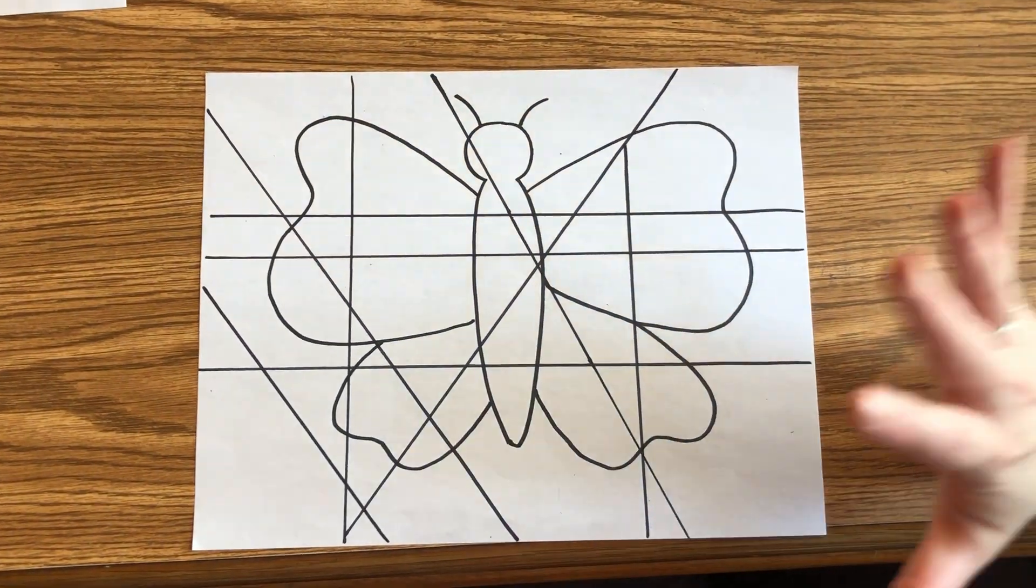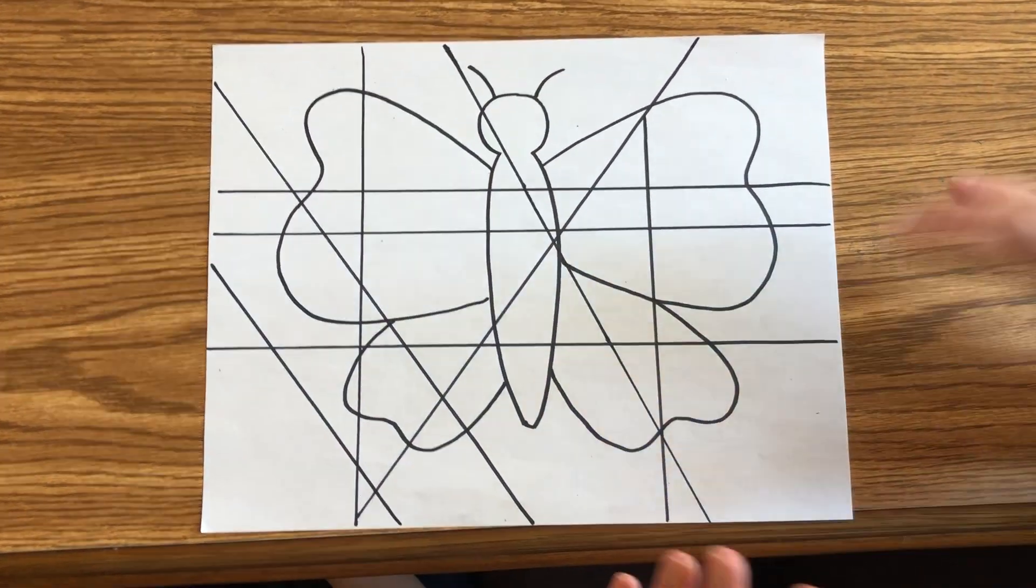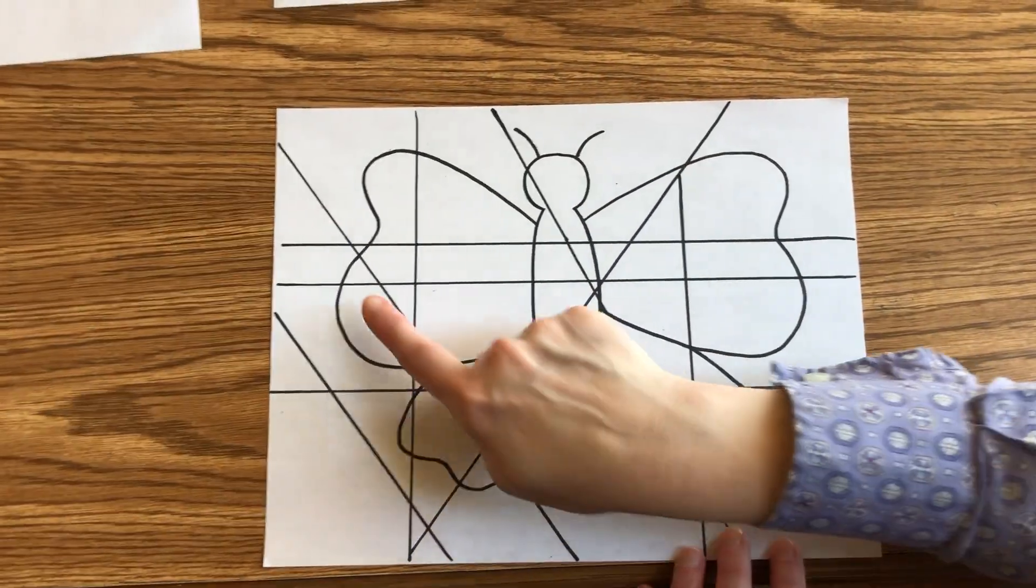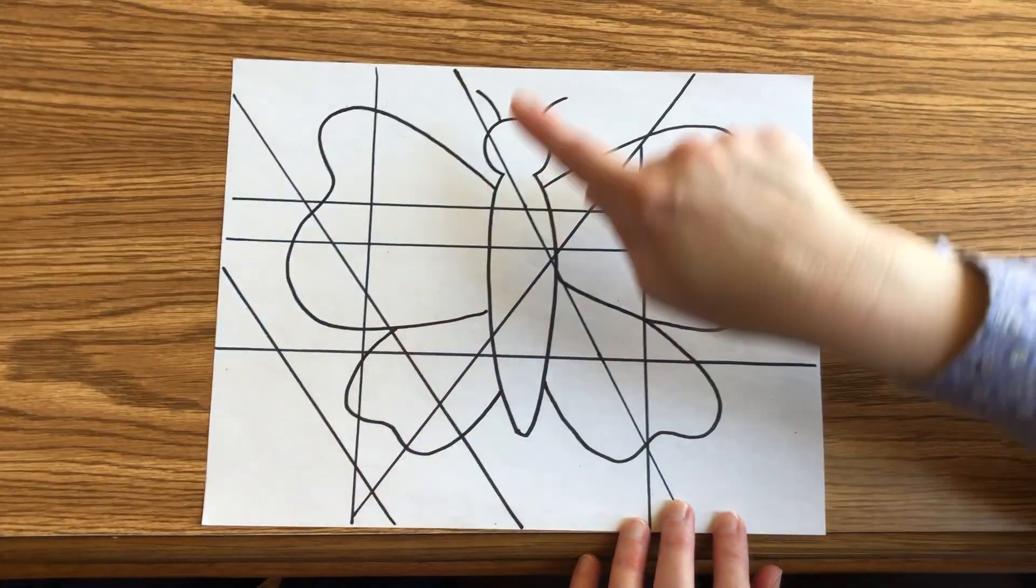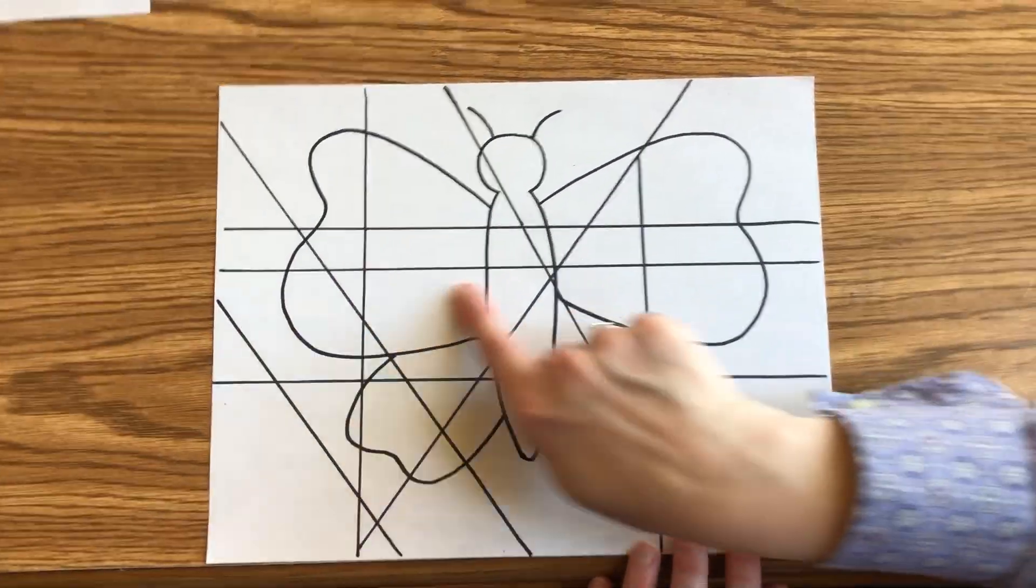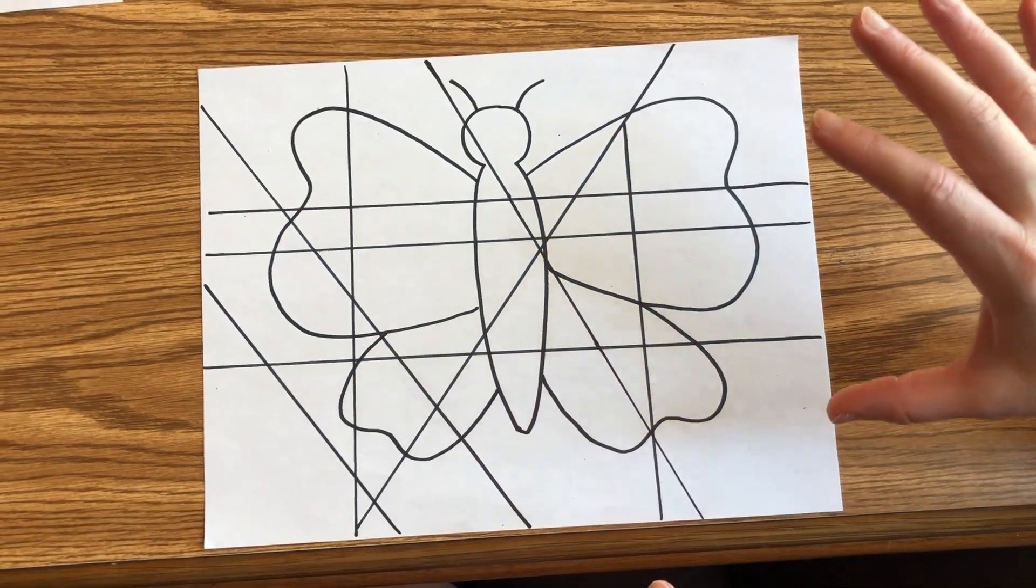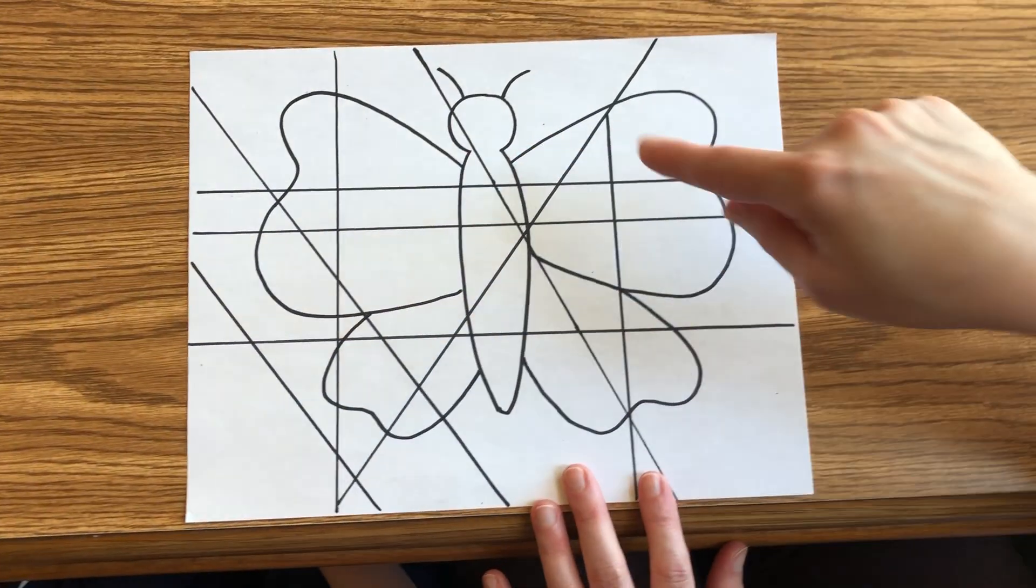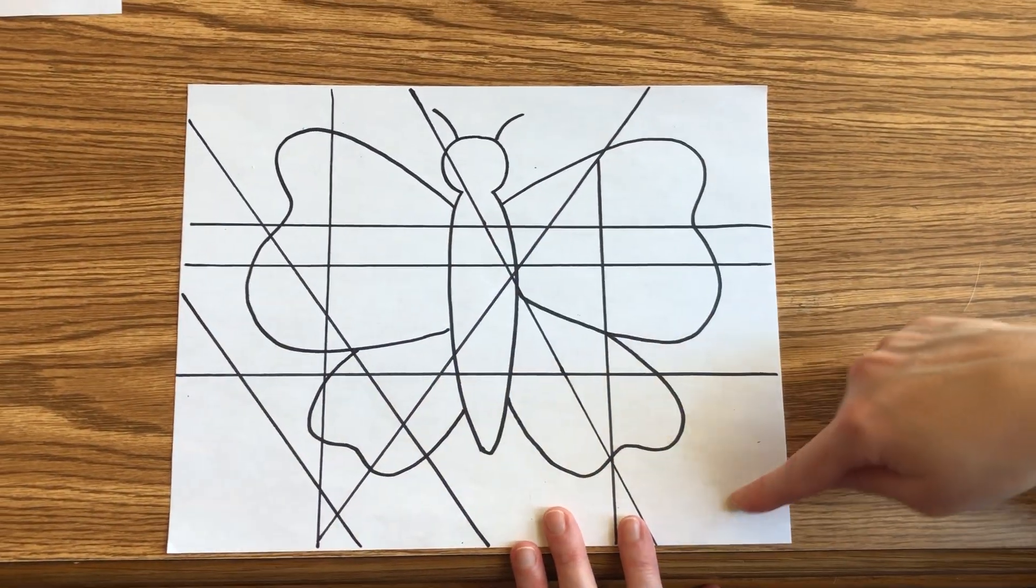Step three, you're going to get a straight edge, like a ruler, or I just used the edge of a piece of paper. And you're going to make diagonal lines, and then you're going to do the vertical, very tall vertical lines, happy horizontal lines. And make sure they can either go all the way across, or some of them can just be part of the way across.